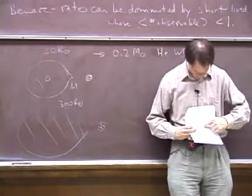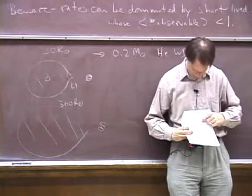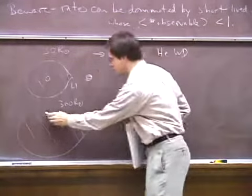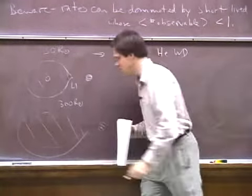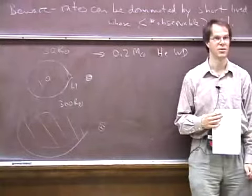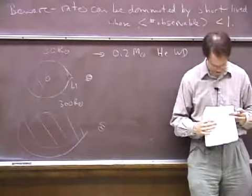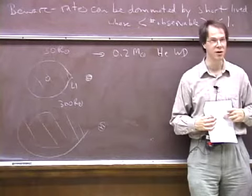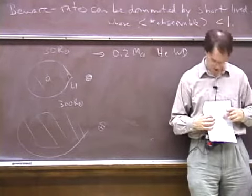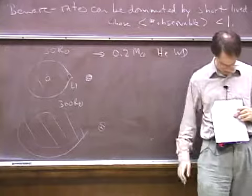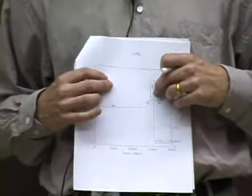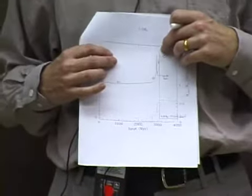The star evolves, exhausts hydrogen in the center, and swells up to become a red giant. But as a red giant it's only about 150 solar radii — it doesn't fill the Roche lobe, so no mass transfer. It happily finishes its red giant evolution, starts burning helium stably in the center, and lives for another few hundred million years burning helium.